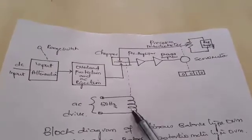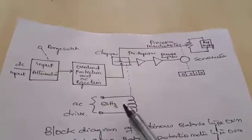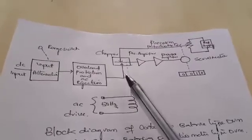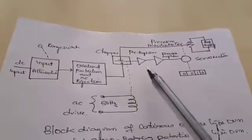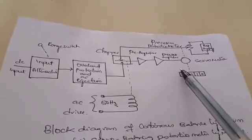That square wave signal is driven by using an AC drive circuit at a line frequency of 50 hertz, and then it is given to the preamplifier and the power amplifier where the signal is amplified, and it generates pulses which are required to operate the servo motor.